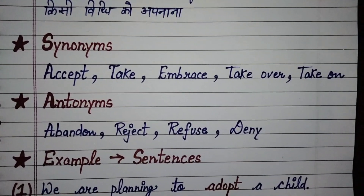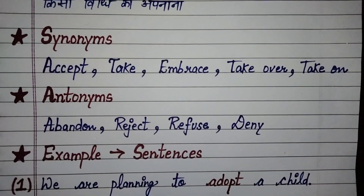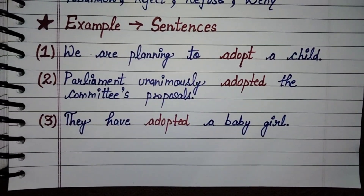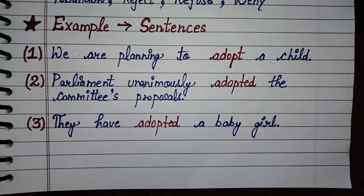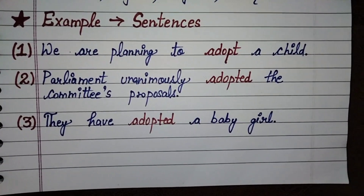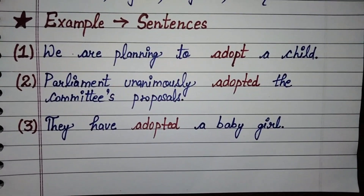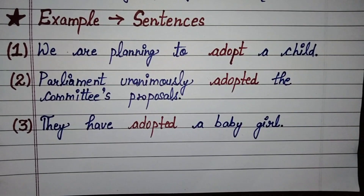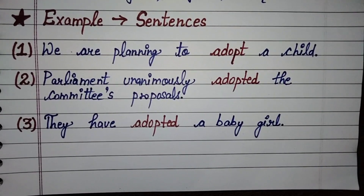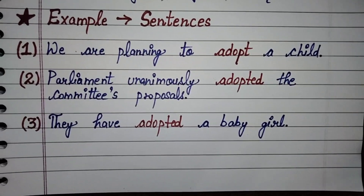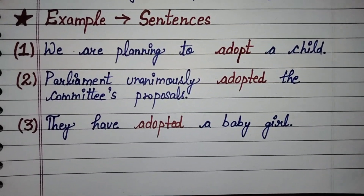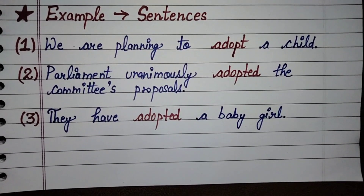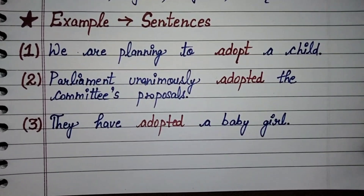So these all are the synonyms and antonyms of adopt. Now, example sentences. First sentence is: we are planning to adopt a child. Hum plan kar rahe hai ek child ko adopt karne ka. Iska meaning hai ki hum yojna bana rahe hai ek child ko adopt karne ki.